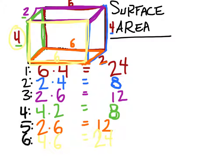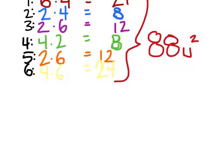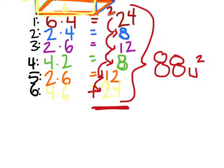So we found the surface area of each of the six surfaces. All we've got to do now is take all of these and find the sum — just add them all together. That would be 24 + 8 + 12 + 8 + 12 + 24, which gives us 88 units squared. The units will usually be labeled as inches, meters, feet, and so on, so pay attention to your units.